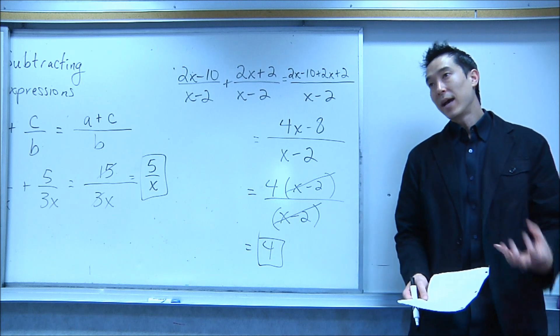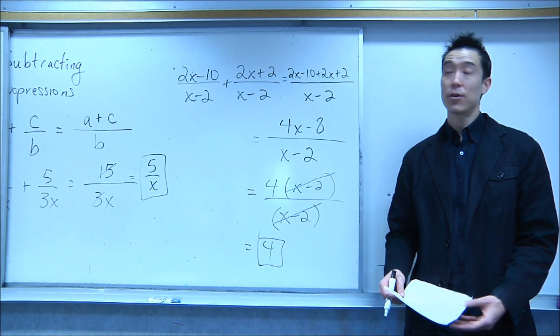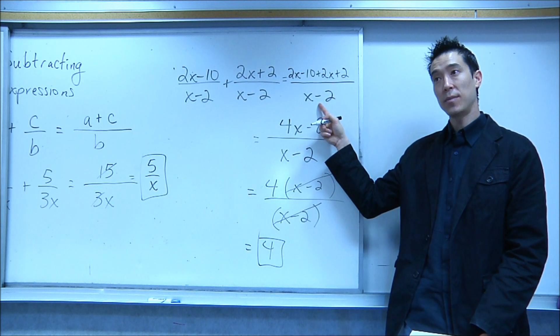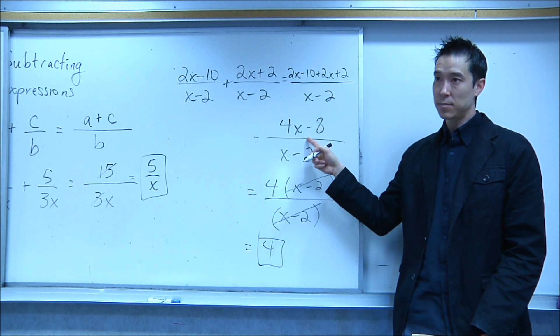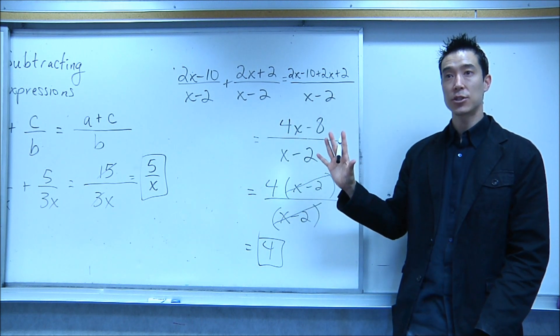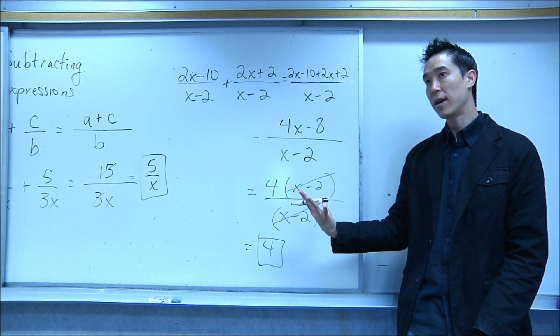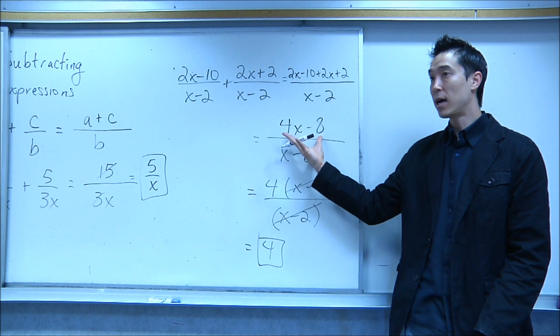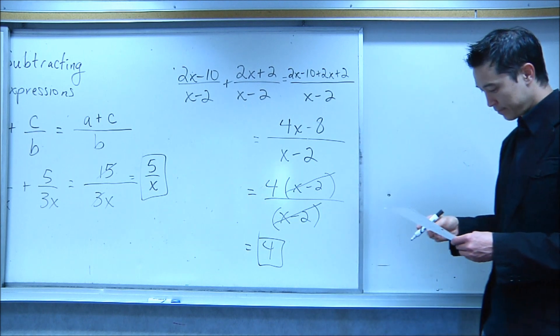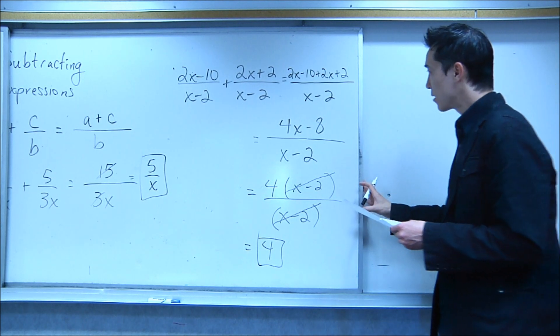So again, I'm adding fractions, but they already have the same denominator. Your rule is just to add all the stuff in the top together over that same denominator. Combine your like terms. It comes out to 4x minus 8 over x minus 2. Once you guys are down to a single fraction, then try to factor it. In this case, we could factor a 4 out, and it worked out really nice because the x minus 2 is reduced.